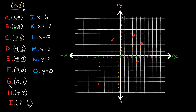Point G is the reverse: it's at (0, 7). We move zero spaces in the x-direction — which means we stay right at the origin on the x-axis — and then we move seven spaces in the positive y-direction: 1, 2, 3, 4, 5, 6, 7. So this point right here is (0, 7), which is point G.